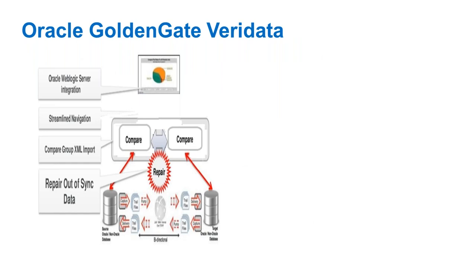VeriData architecture requires WebLogic installed first — VeriData Server sits on top of WebLogic. Once the VeriData Server is configured, you set up VeriData jobs that connect to both source and target databases, compare them, generate a discrepancy report, and optionally repair discrepancies. Repairing is not enabled by default — you must explicitly enable the repair option.